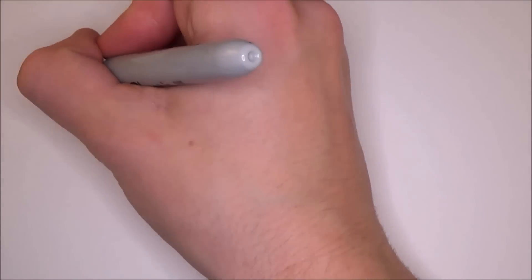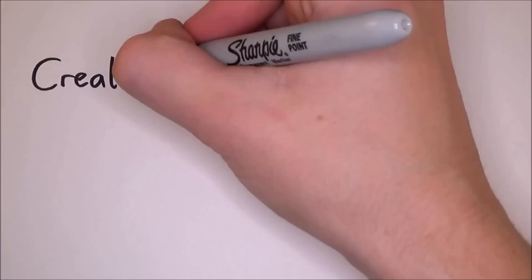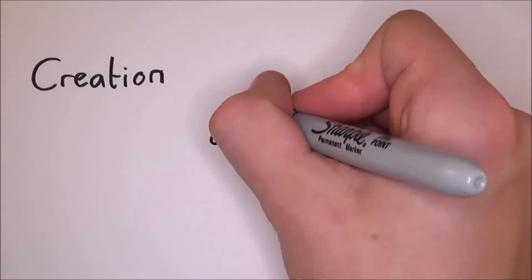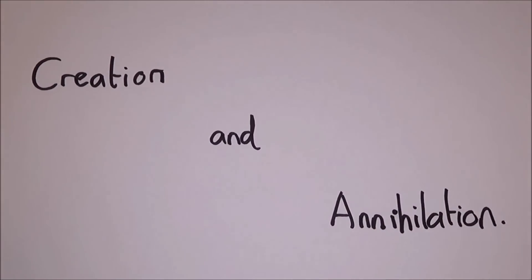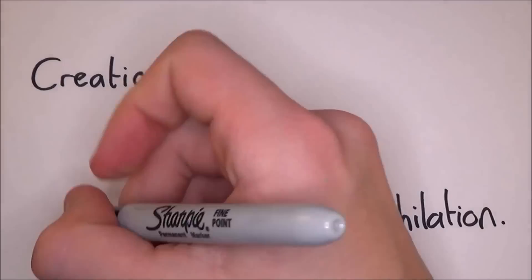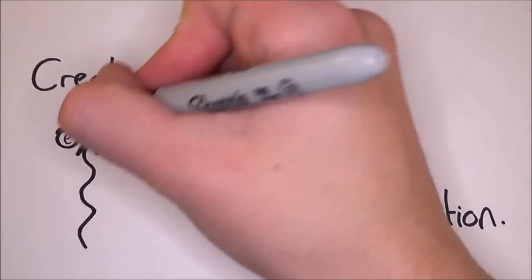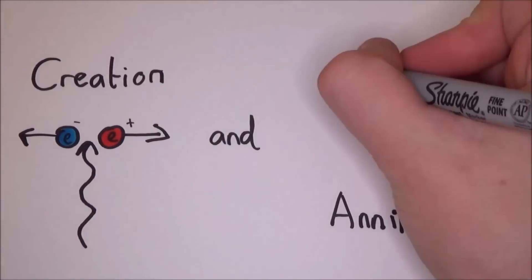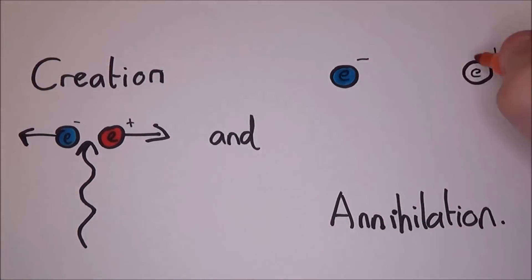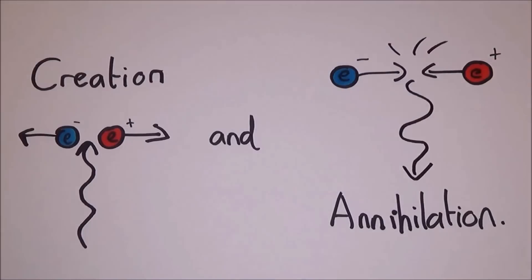Another concept we need to understand is pair creation or pair annihilation. This is when matter and antimatter come together and annihilate each other so that there is nothing left but energy, or the other way around — energy will form matter and antimatter.